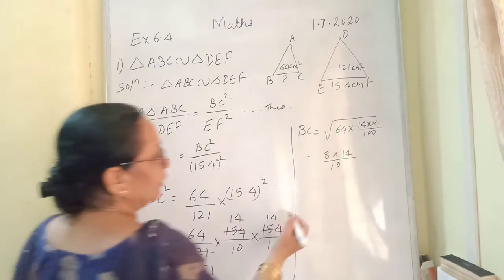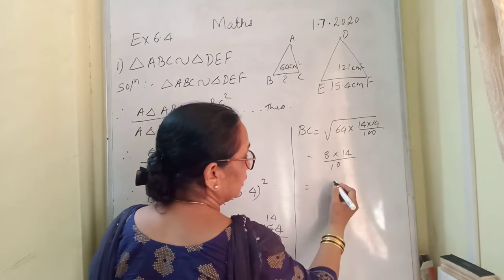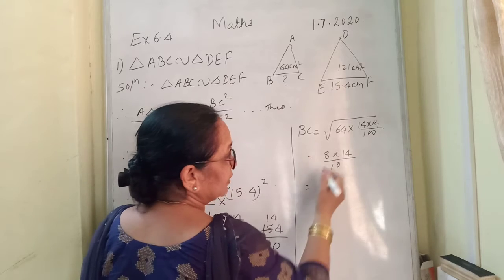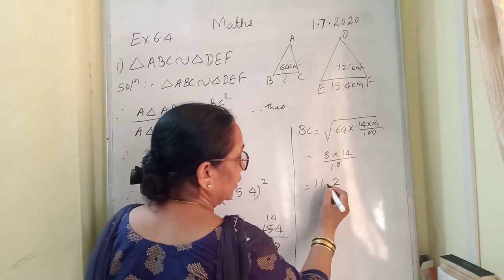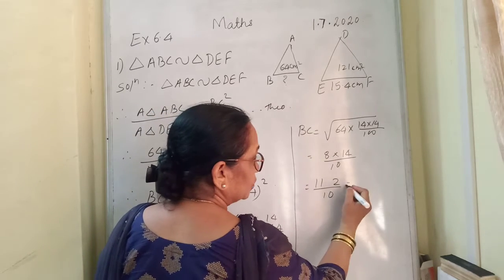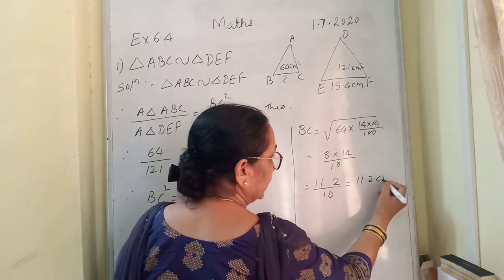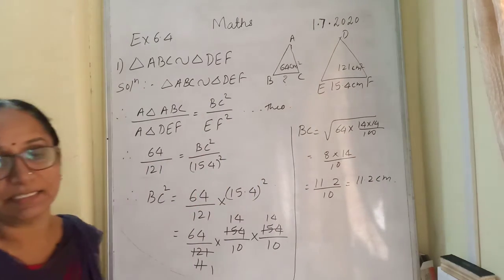Therefore, it will be equal to 8 times 4 is 32 carry over 3, 8 times 1 is 8 plus 3 is 11, upon 10. That comes to 11.2 cm. This is the answer.